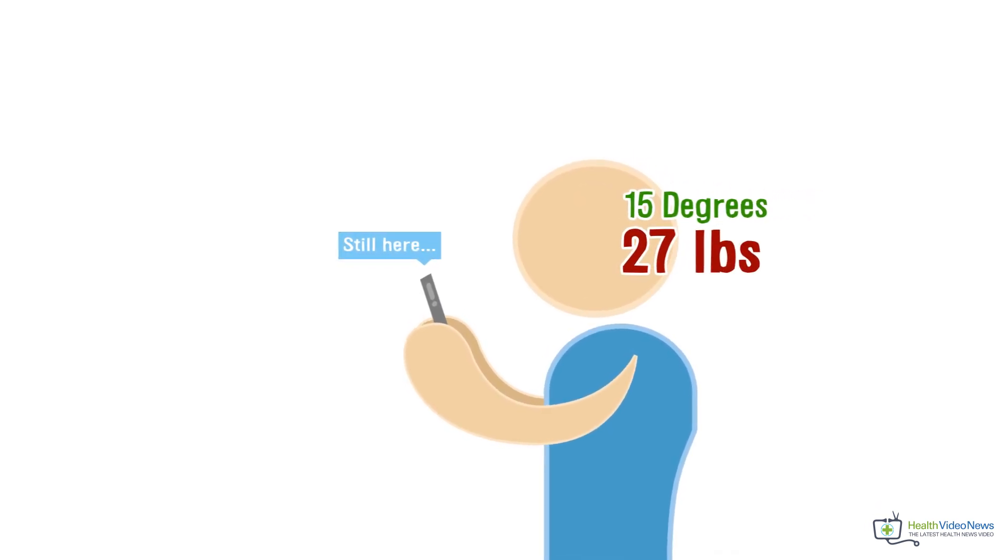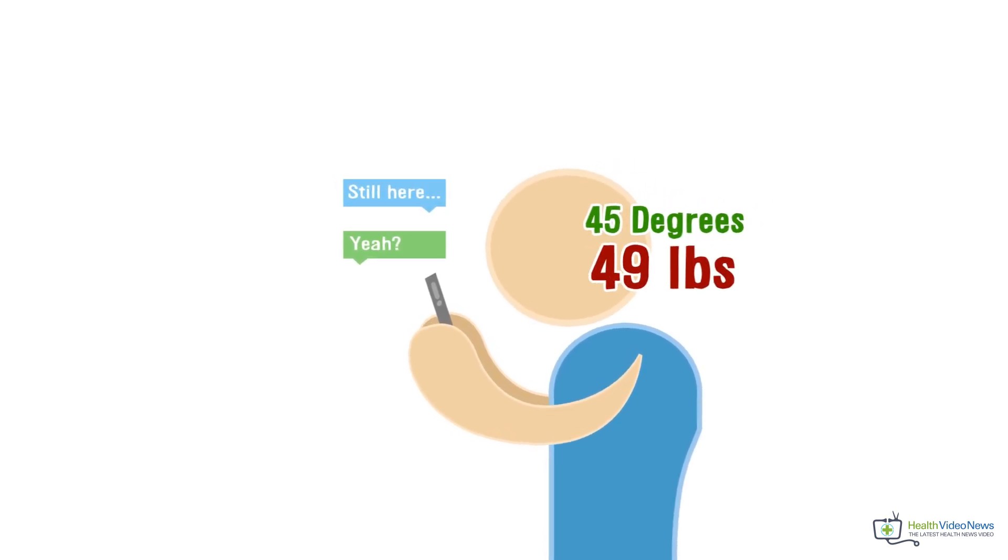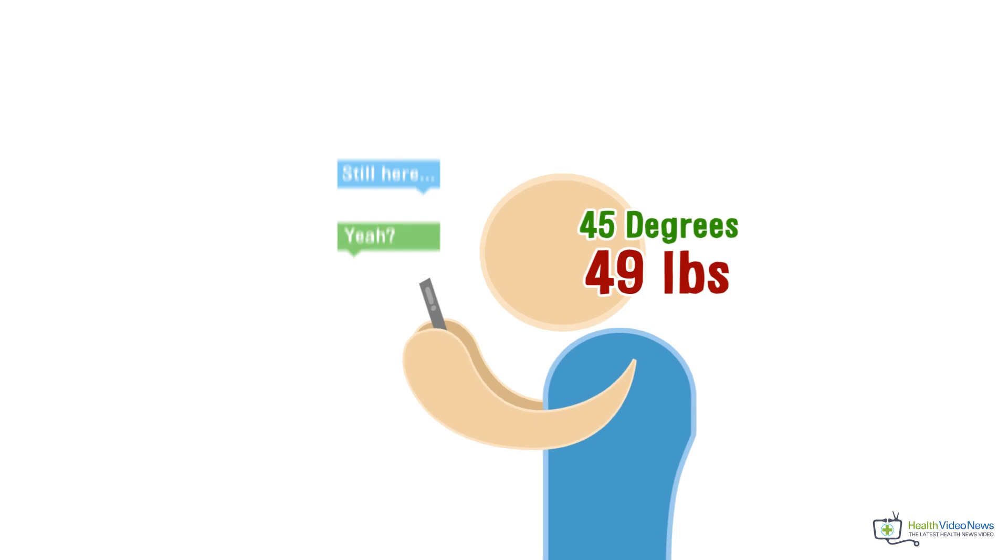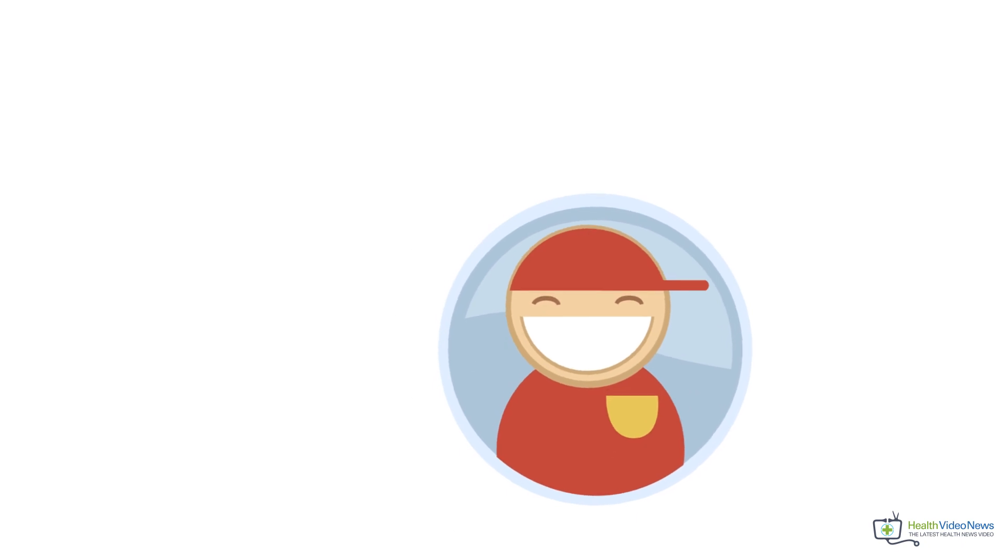At a 15 degree angle, the force that acts on the spine surges to 27 pounds. At 45 degrees, the pressure increases to 49 pounds. And at 60 degrees, the force becomes as much as 60 pounds, a load much similar to the weight of an eight-year-old child.